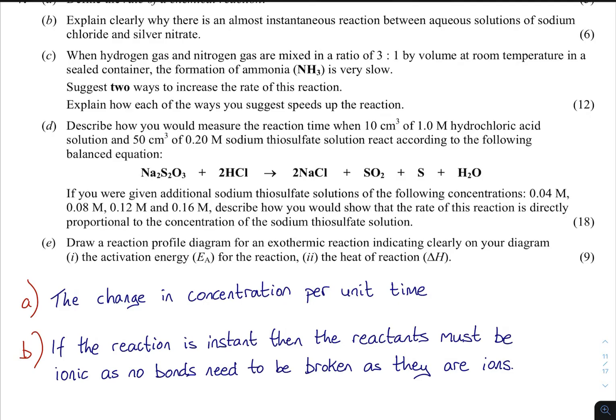Part C: When hydrogen gas and nitrogen gas are mixed at a ratio of 3:1 by volume at room temperature in a sealed container, the formation of ammonia NH3 is very slow. Suggest two ways to increase this rate of reaction and explain how this works.